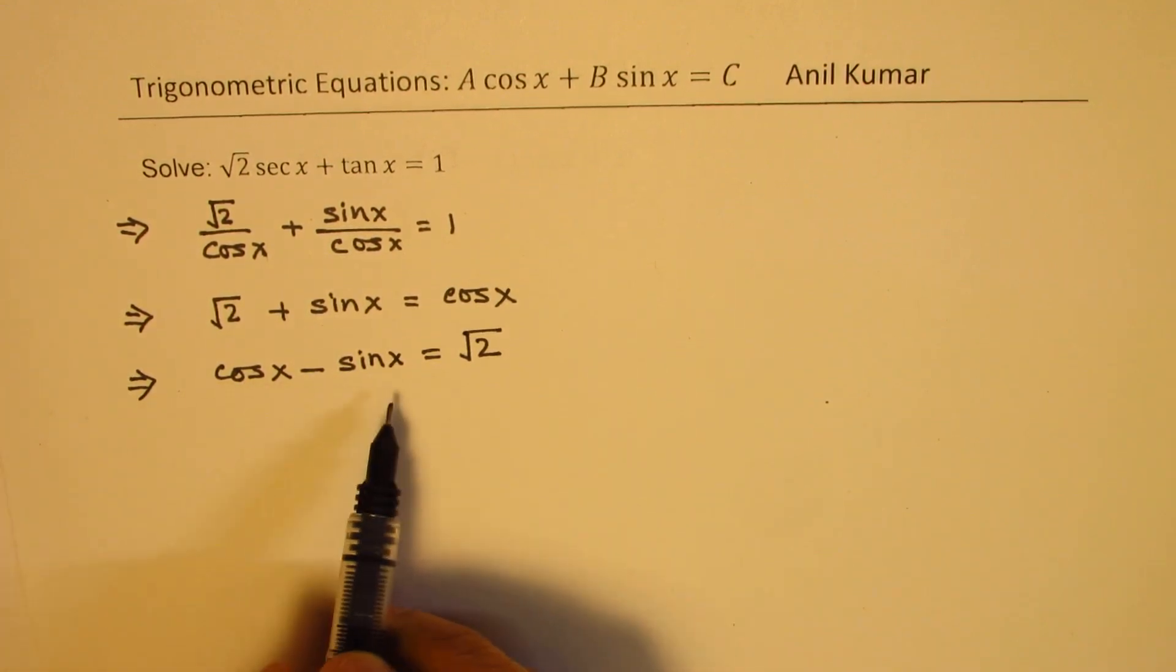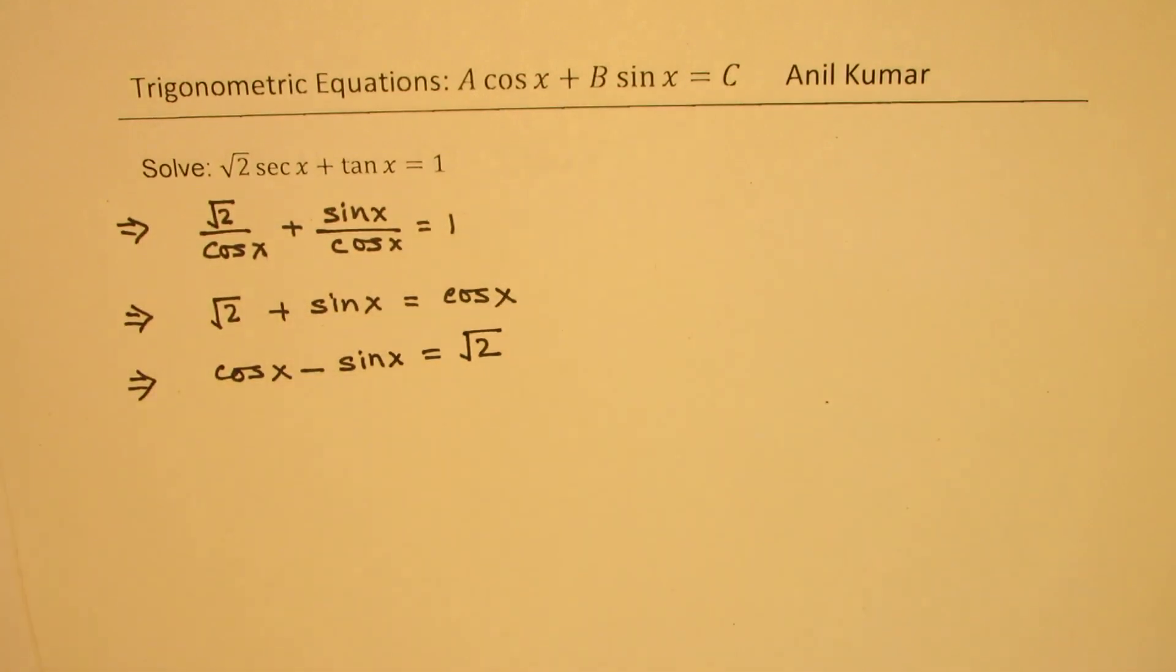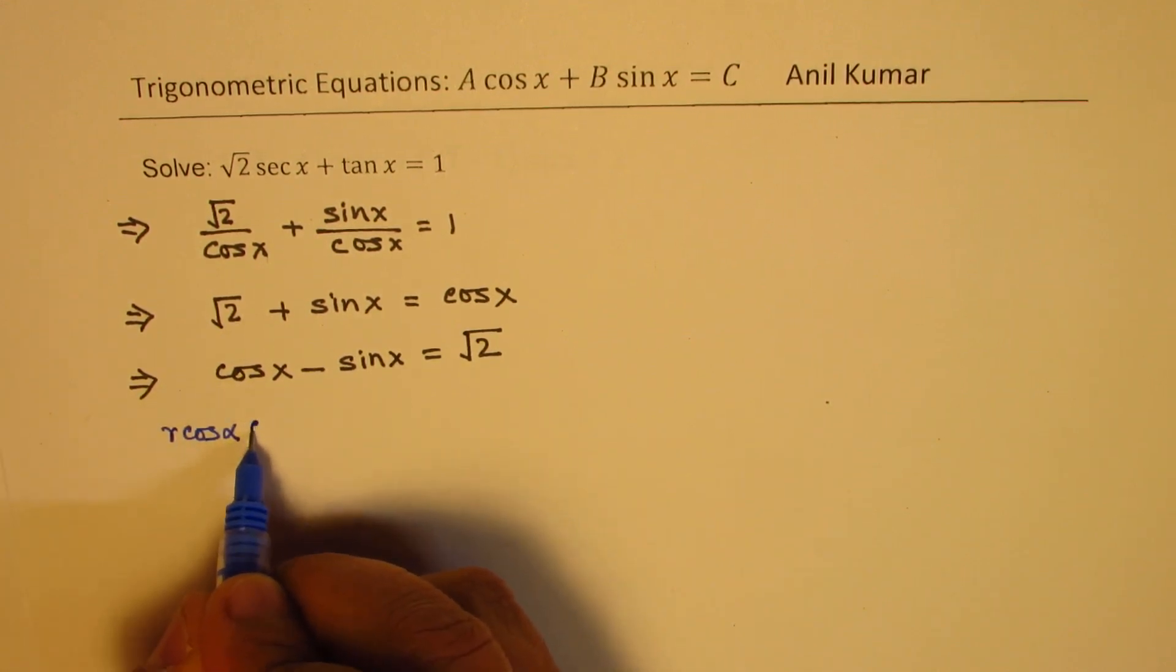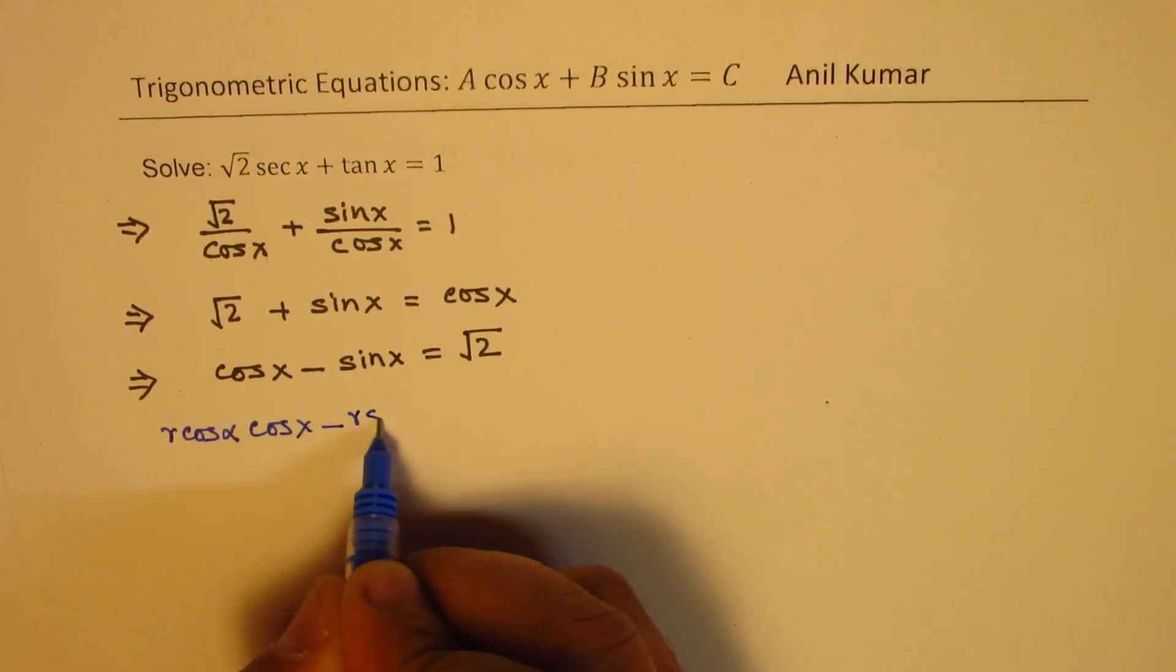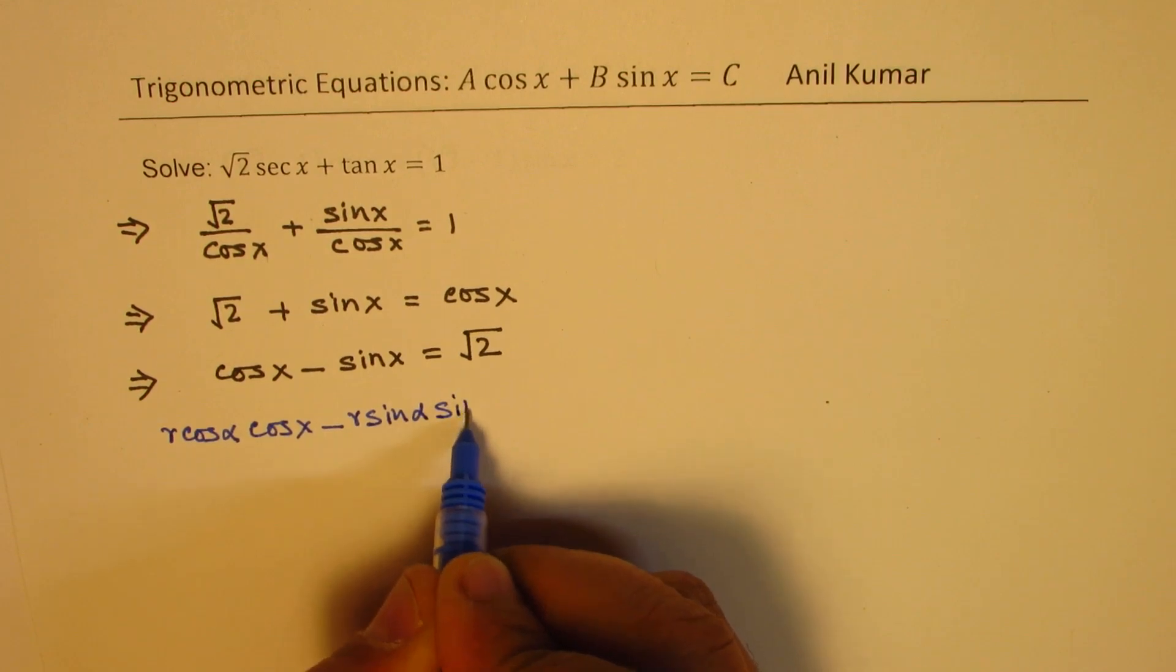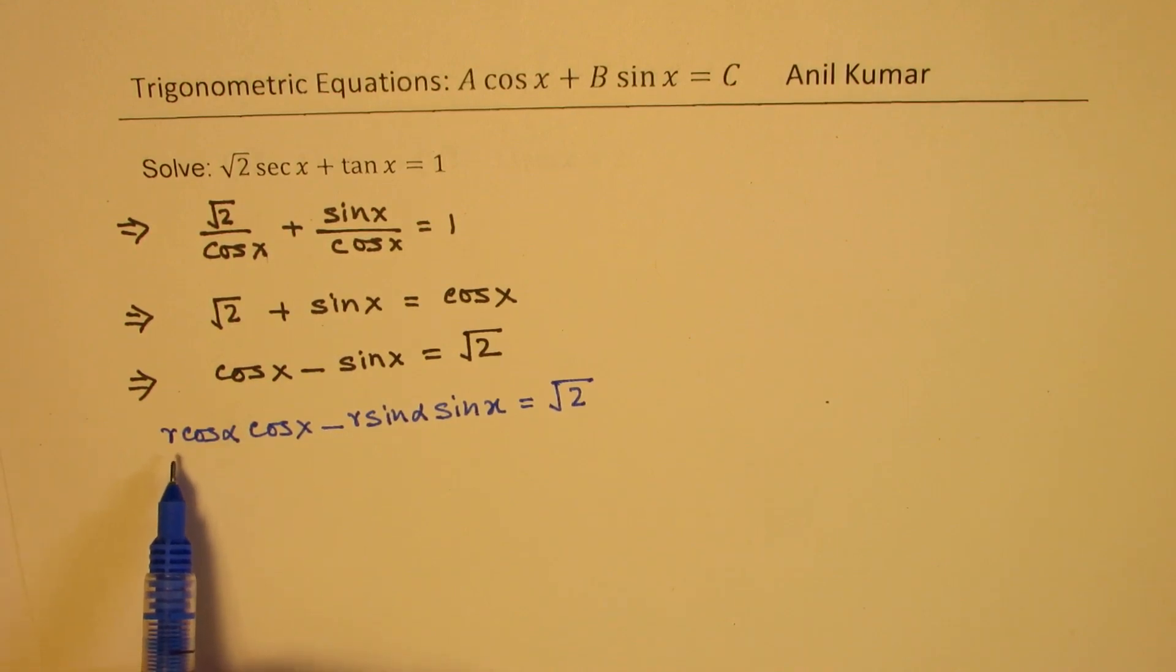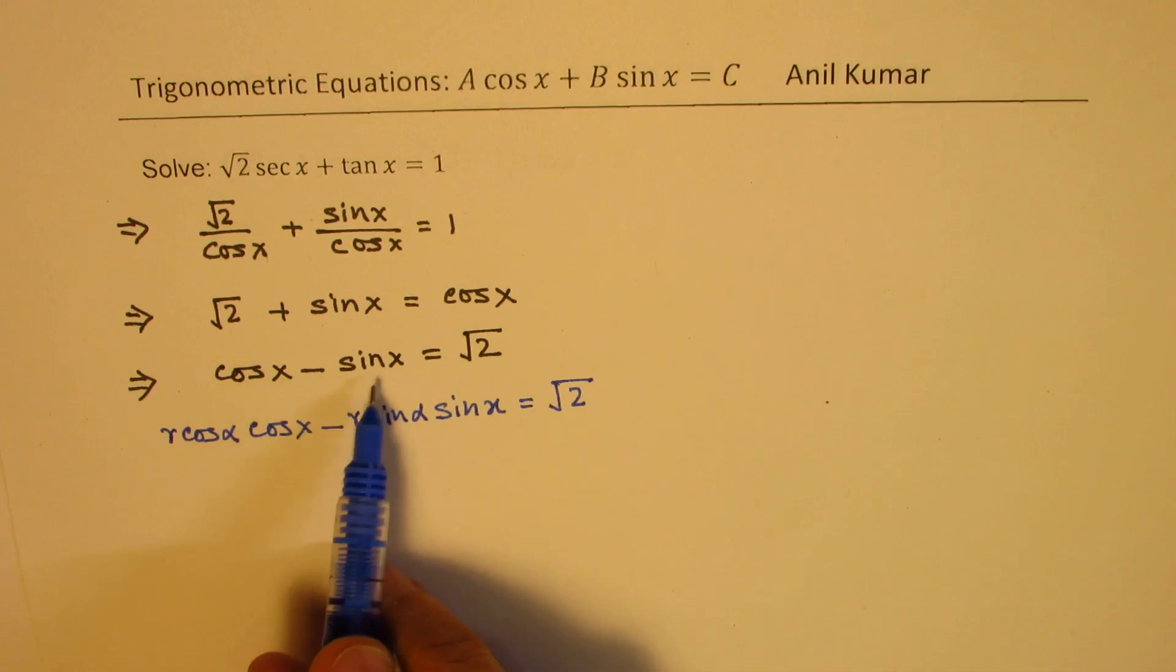Now we get a familiar form of the equation like a cos x plus b sin x. Now to solve this equation, we could always write this in the form of r cos alpha cos x minus r sin alpha times sin x equals to square root of 2. Now the idea of writing r cos alpha r sin alpha is basically to write this in one particular trigonometric ratio which is cosine.